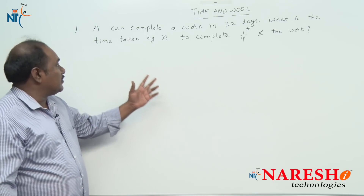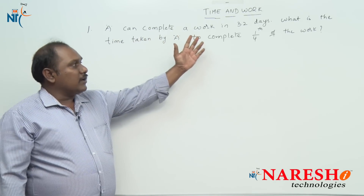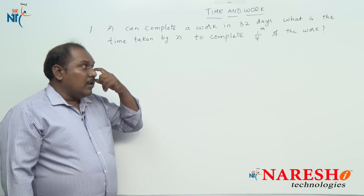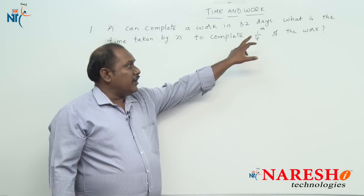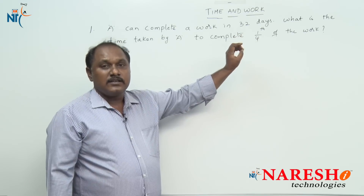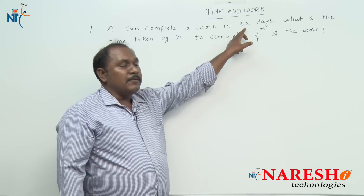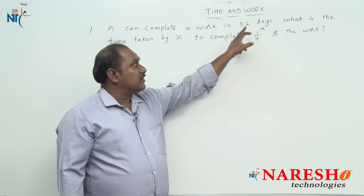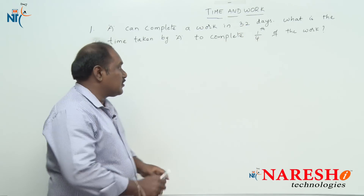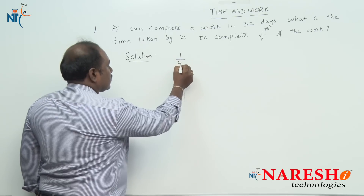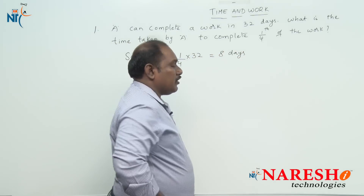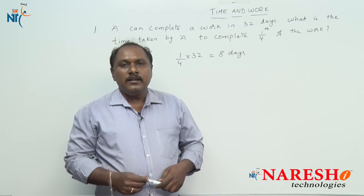A can complete a work in 32 days. What is the time taken by A to complete one fourth of the work? If you divide the total work into four parts, to do one part, how much time will he take? Total work is completed in 32 days — that is, to do four parts takes 32 days. So the solution is one fourth of 32, which is 8 days. A will complete one fourth of the work in 8 days.